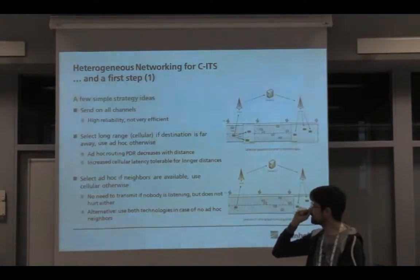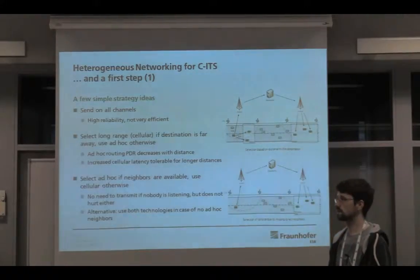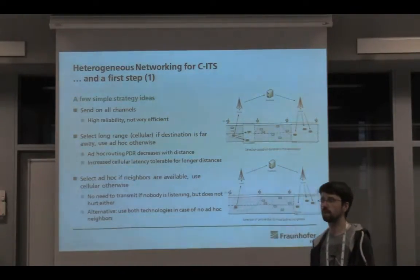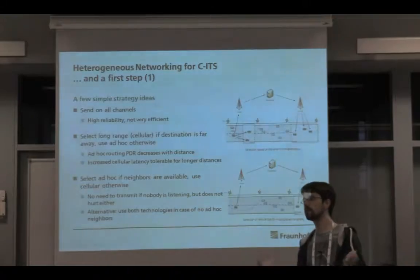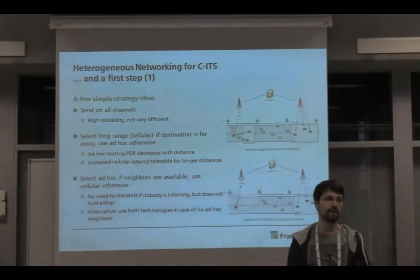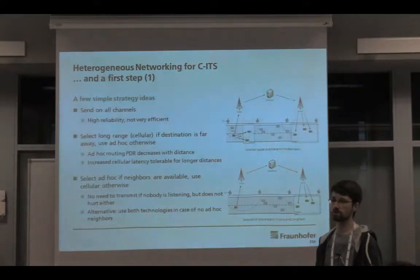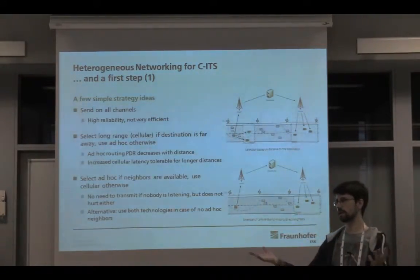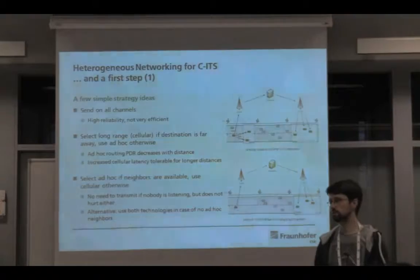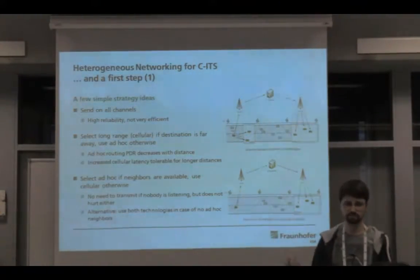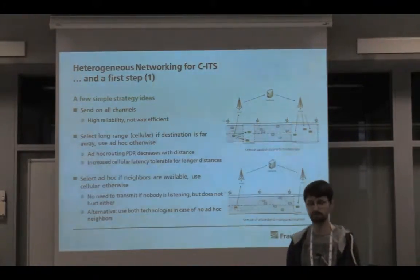Another strategy: select ad hoc networks if neighbors are available, and use cellular otherwise. This addresses the earlier scenario where you have an 11p device but know nobody is around — no beacon, no CAM, nothing for a very long time — so it could be useful to switch to the cellular network to cover a longer range. This is also useful for overtaking scenarios, where measurements showed that the distance achievable with a CAM may not be enough on a rural road.